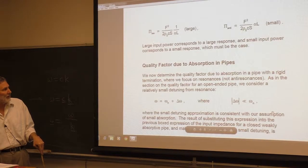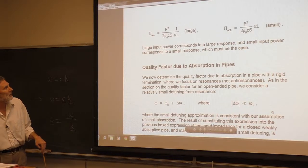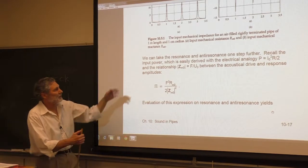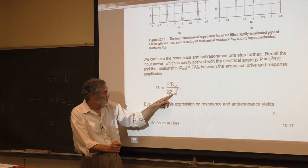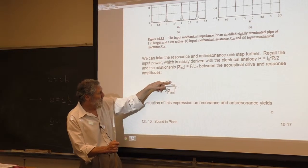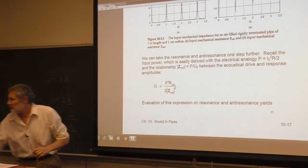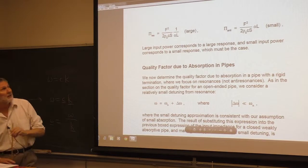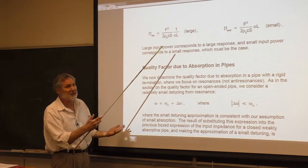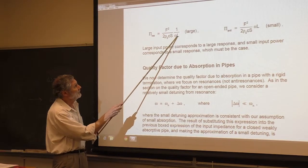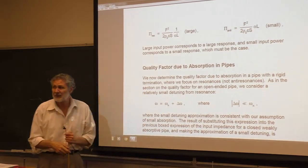We can evaluate this on resonance and anti-resonance. On resonance, the imaginary part vanishes, so you just get one over the input resistance. We've already analyzed the input resistance — plug that in. On resonance we get large power dissipated, so you know the response has to be large, because the small quantity is downstairs. And on anti-resonance, it's upstairs — that's the minimum response.